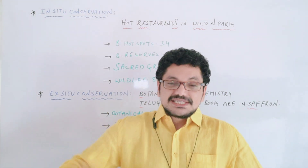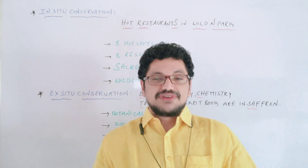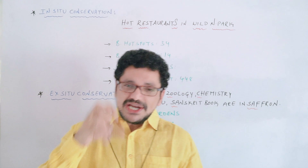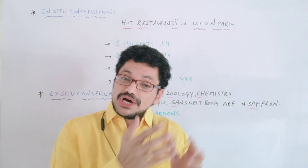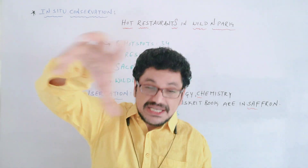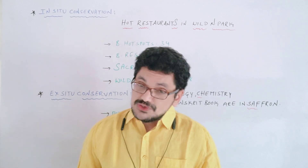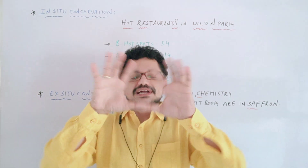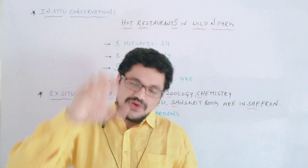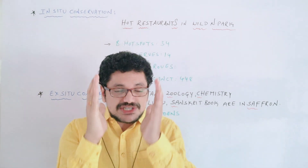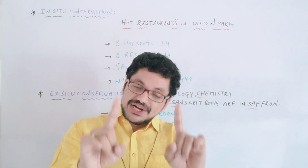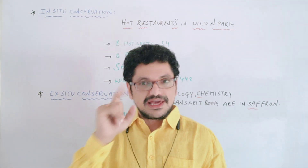In-situ conservation is nothing but conserving the animal where the animal is living, where the organism is living. Generally we conserve the forest in order to protect the tiger. Our main target is to protect the tiger, but here we are not taking the tiger from its natural habitat. We are keeping the tiger where it is living and trying to protect the region around it. So definitely it is costly, very expensive, and economically not that much feasible.